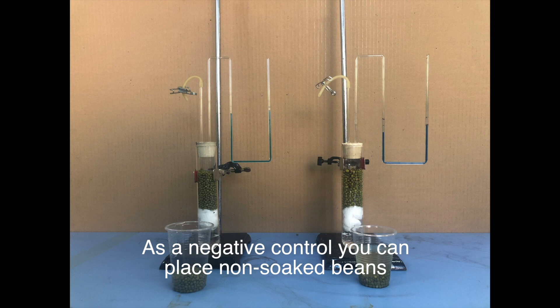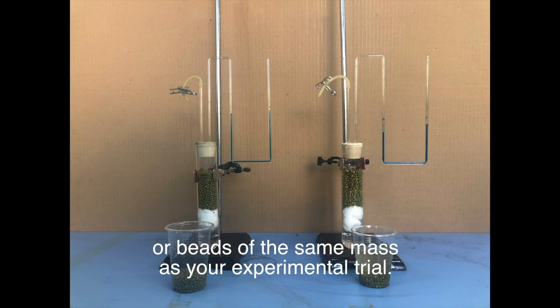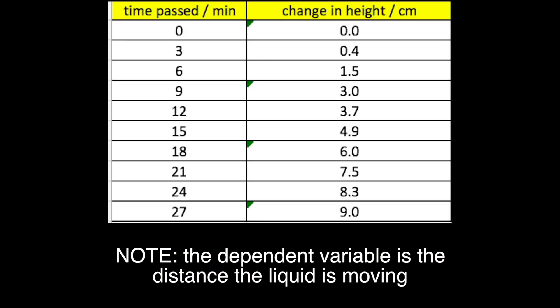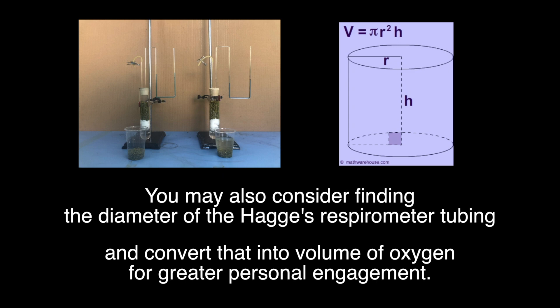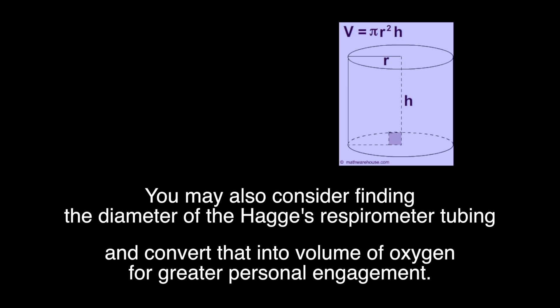As a negative control, you can place non-soaked beans or beads of the same mass as your experimental trial. Note that the dependent variable is the distance the liquid is moving. This could be converted into a rate. You may also consider finding the diameter of the Hagi respirometer tubing and convert that into volume of oxygen for greater personal engagement.